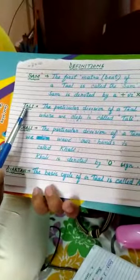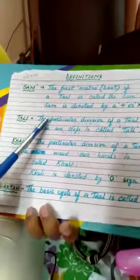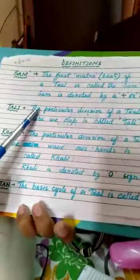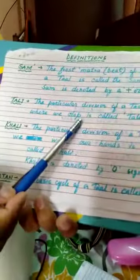Tali. As you know, when you show a particular tal, you have to give tali and khali. So how you define tali? The particular division of a tal where we clap is called tali. Very simple.